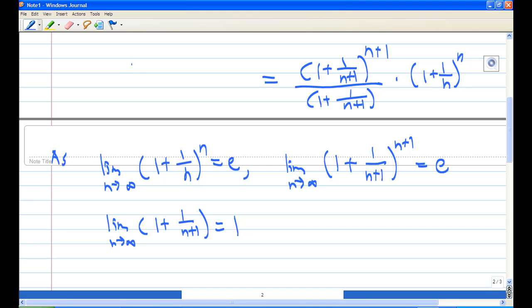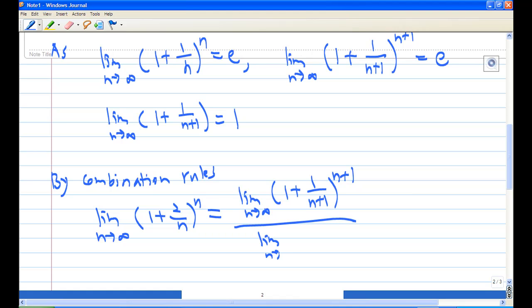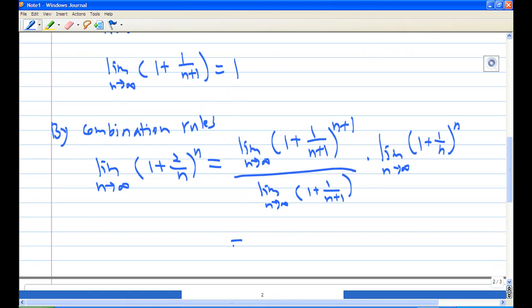Therefore, by the combination rule, the limit as n goes to infinity of (1 + 2/n)^n equals the limit as n goes to infinity of (1 + 1/(n+1))^n times the limit as n goes to infinity of (1 + 1/n)^n. And we are going to have e times 1 times e, which is e squared.